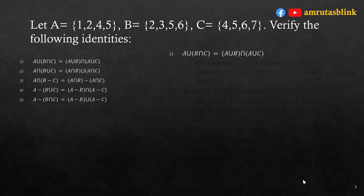For the first identity, starting with LHS: A∪(B∩C). B∩C = {5,6}, so A∪(B∩C) = {1,2,4,5}∪{5,6} = {1,2,4,5,6}. For RHS: A∪B = {1,2,3,4,5,6} and A∪C = {1,2,4,5,6,7}. Their intersection is {1,2,4,5,6}. LHS equals RHS, so the first identity is verified.